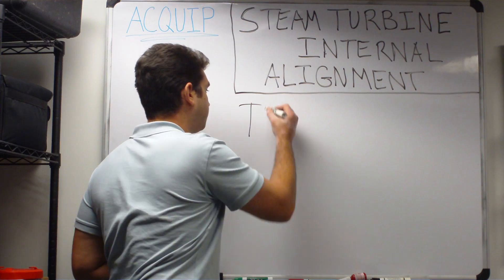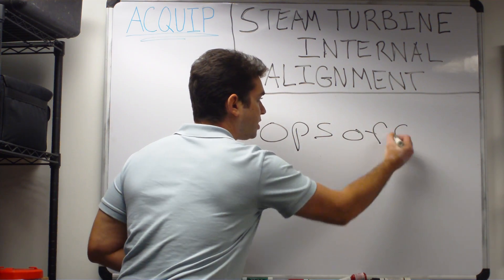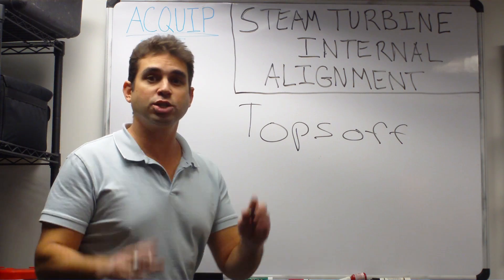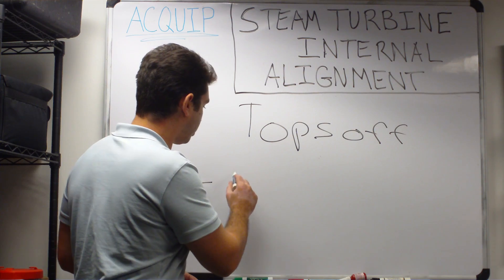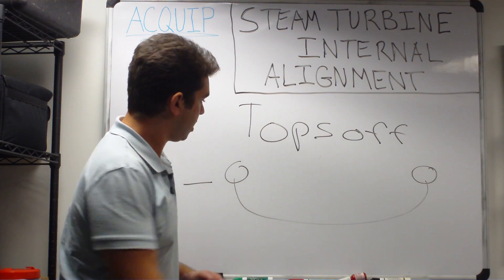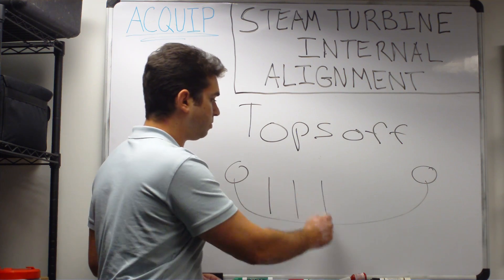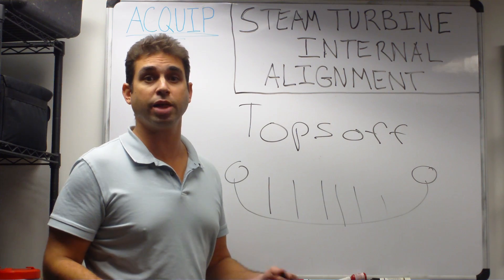The first is tops off. That's when we set up a laser and shoot it through the turbine and measure all of the internal points, whether it be diaphragms or blade rings.